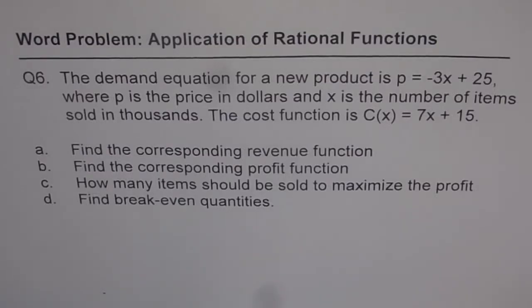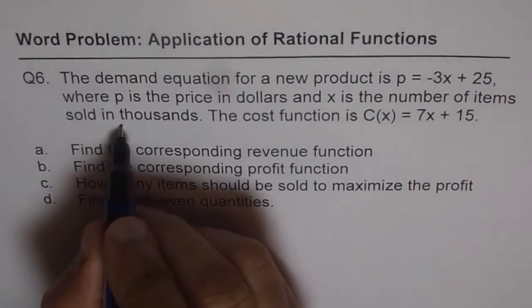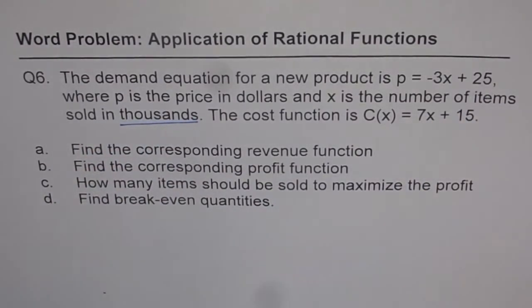Here is the solution for question number 6 of the school assignment. The demand equation for a new product is p equals minus 3x plus 25, where p is the price in dollars and x is the number of items sold in thousands. Remember, number of items sold in thousands. The cost function is C(x) equals 7x plus 15.